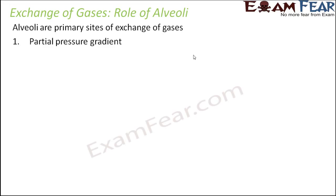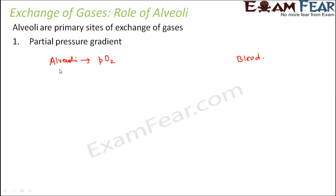This exchange takes place from alveoli to blood. We need to know the values of partial pressure of oxygen in the alveoli. The air which we have breathed in is present in the alveoli. The partial pressure of oxygen in that air is 104 mmHg, and the partial pressure of carbon dioxide is 40 mmHg.